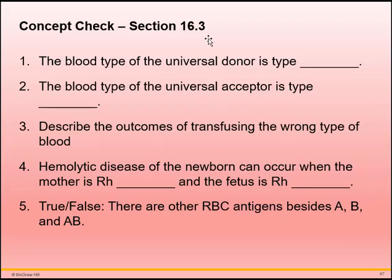Concept check for 16-3. First question: the blood type of the universal donor is Type O, because it doesn't have any antigens on the surface for other blood types to react to. Second question: the blood type of the universal acceptor or recipient is Type AB, because it has both A and B antigens and therefore no antibodies for A or B, so it will not react to any other blood type.